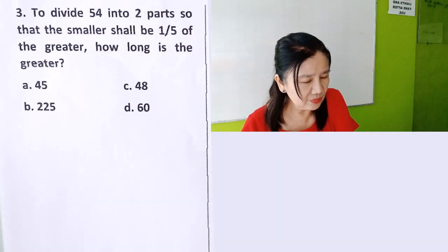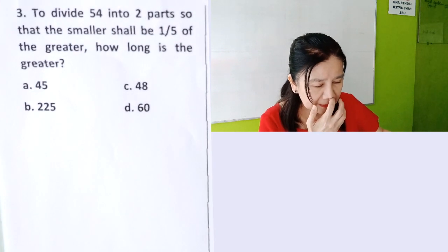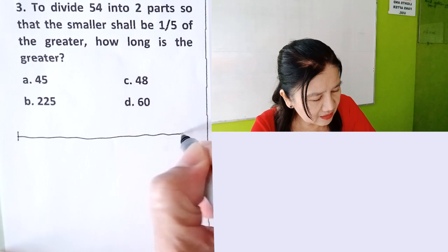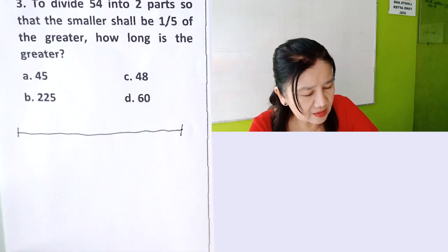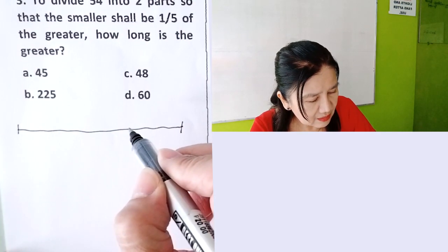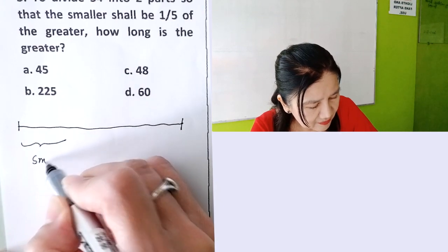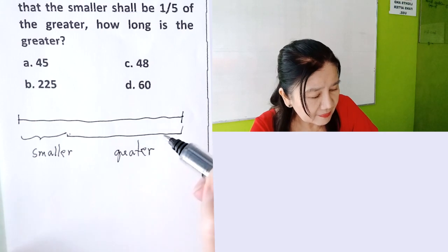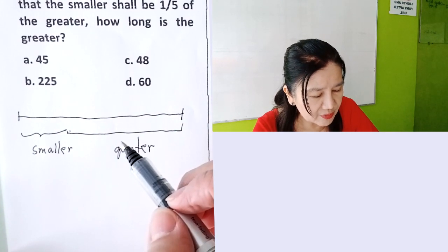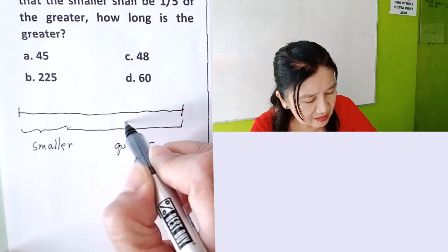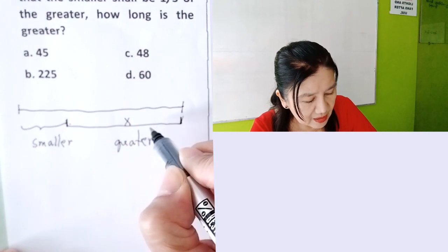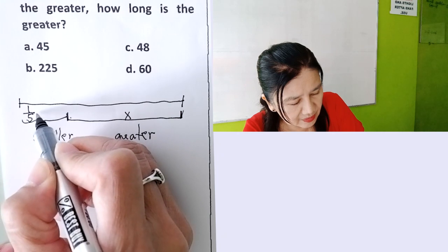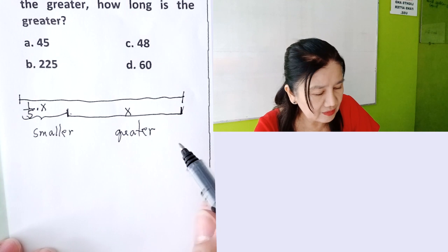Problem number three: divide 52 into two parts so that the smaller shall be one-fifth of the greater. How long is the greater? So if we divide this into two parts — the smaller is here and the greater will be this portion. It says the smaller shall be one-fifth of the greater. So if we let the greater be x, then the smaller will be one-fifth x, or x over 5.